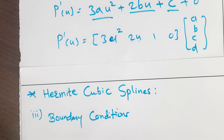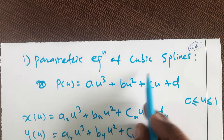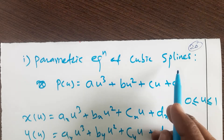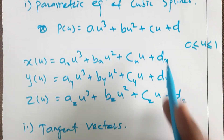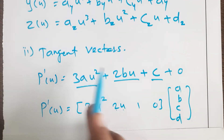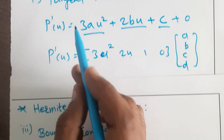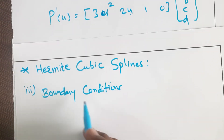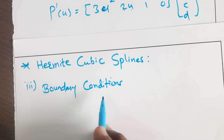Hello everyone. In the last video we have seen the parametric equation — the parametric equation of the Hermite cubic spline and the tangent vector. Now we will go for the boundary conditions.